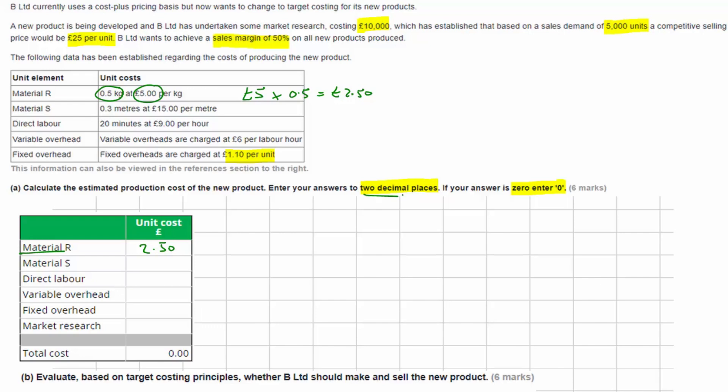Now for material S, we need 0.3 of a meter and it costs £15 per meter. So if we take our £15 and multiply by 0.3, that gives us a cost of £4.50 per unit.